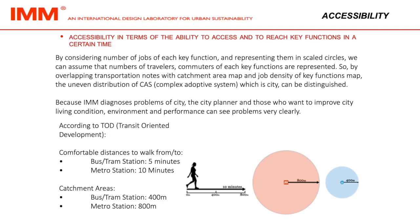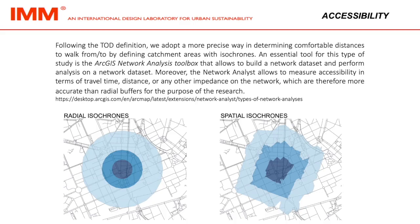According to TOD, transit oriented development, comfortable distances to walk from and to bus and tram stations are 5 minutes, and metro stations 10 minutes, with catchment areas of 400 meters for bus and tram stations and 800 meters for metro stations. Following the TOD definition, we adopt a more precise way in determining comfortable distance to walk by defining catchment areas with isochronomes.